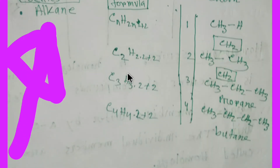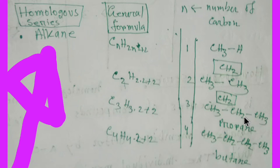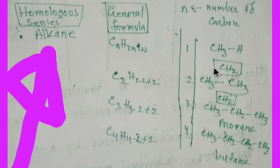If you take n=3, you get 2×3+2 = 8, so C₃H₈ — that is CH₃CH₂CH₃, propane. And if you take n=4, you are getting butane. The difference between each consecutive compound is CH₂.